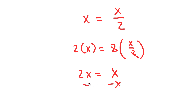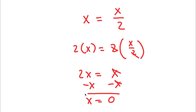Now, if I subtract x on both sides, x minus x — these two cancel out — and 2x minus x is x, so I'm left with x is equal to 0. So that's another way of solving this problem.